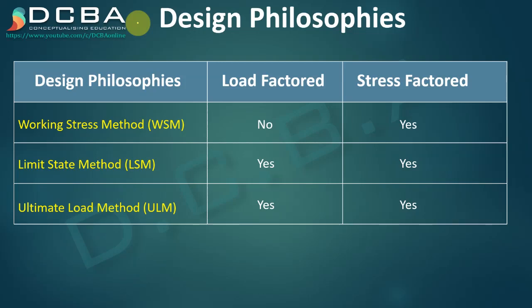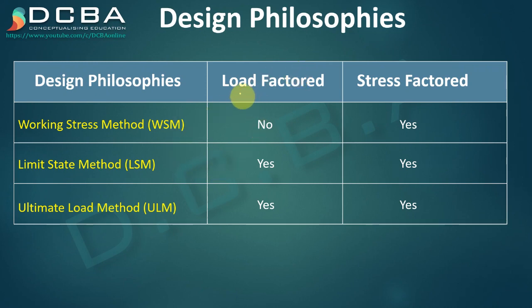Welcome to the second lecture of RCC design. If you remember, this is what we started in the previous lecture. To make the design safe, we have two safety factors. First, we try to factor the load — we multiply the load by a factor, generally 1.5, though not always the same. Those factors are given in the IS code and I will tell you which table.